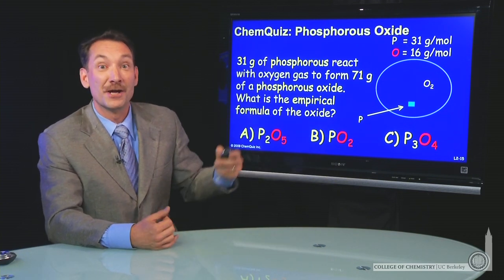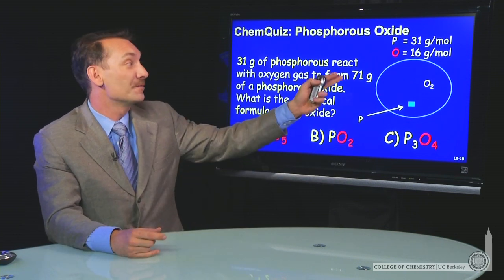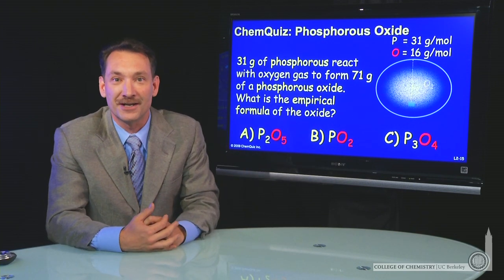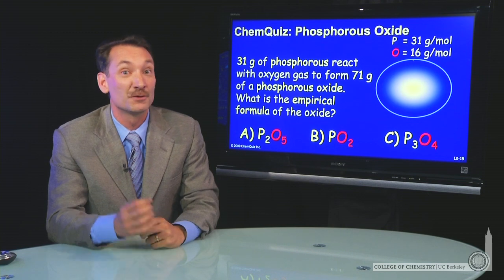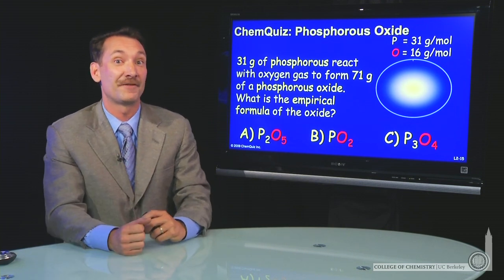31 grams of phosphorus will react with excess oxygen to form 71 grams of a phosphorus oxide. The question I have for you is, what's the empirical formula of that phosphorus oxide?